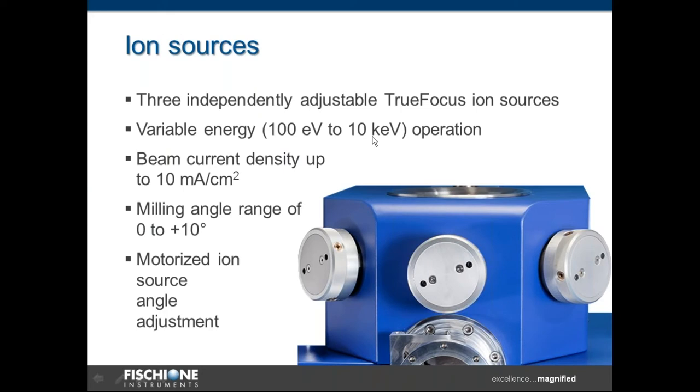The ion sources utilized in the try-on mill are three independently adjustable true-focus ion sources, the same technology that we're utilizing in our other ion milling systems. The energy range is variable from 100 EV for gentle polishing up to 10 kV for rapid material removal. The beam current density is high, up to 10 mA per square centimeter, and the milling angle range is adjustable from 0 to 10 degrees, utilizing motorized ion source angular adjustment, with each of the three sources being at the same angle.